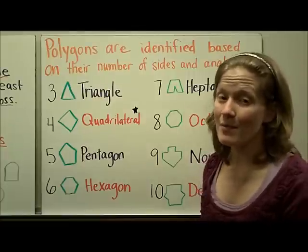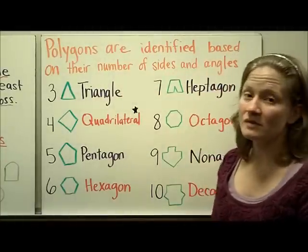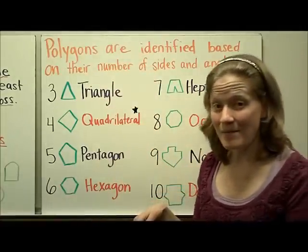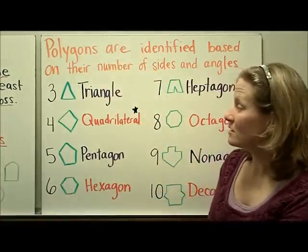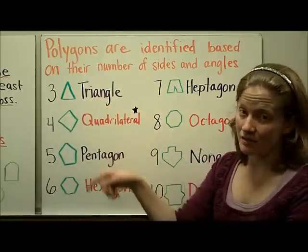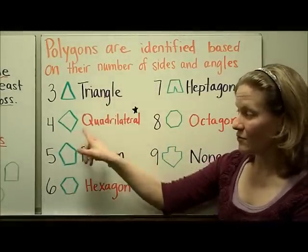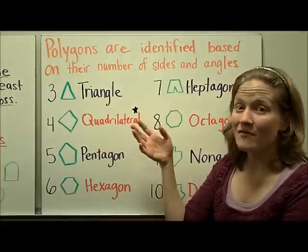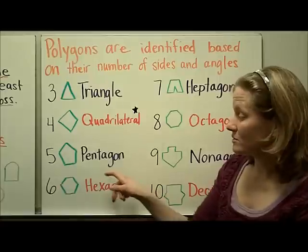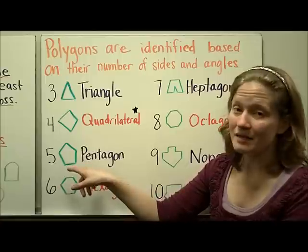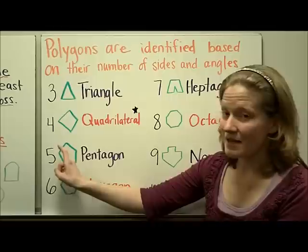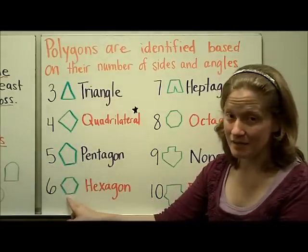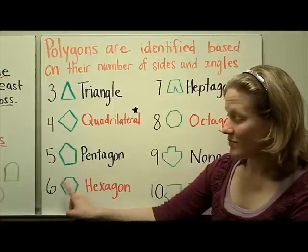Polygons are identified based on their number of sides and angles. A triangle has three sides and three angles. A quadrilateral has four sides and four angles — we'll come back to quadrilaterals in a minute. A pentagon has five sides and five angles. The Pentagon in Washington DC is built in this shape. A hexagon has six sides and six angles — this is the shape of a honeycomb.